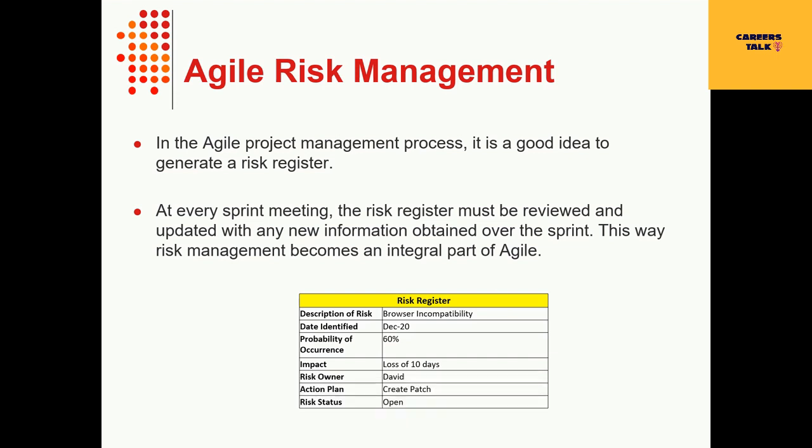In the Agile management process, it is a good idea to have a risk register. The risk register should be created during the first feature backlog discussion and updated frequently throughout more complex efforts as new risks are identified, accepted, or mitigated. This is a list of potential risks to project completion. The register should include a description of the risk, the date it was identified, the probability of the risk occurring, how severely the risk could impact the project, what action should take place, and the risk status — whether it is open or closed.